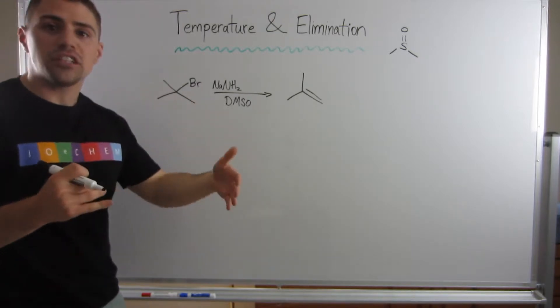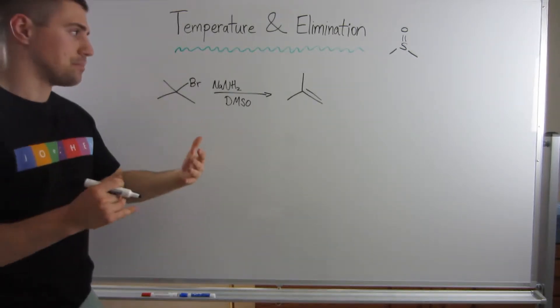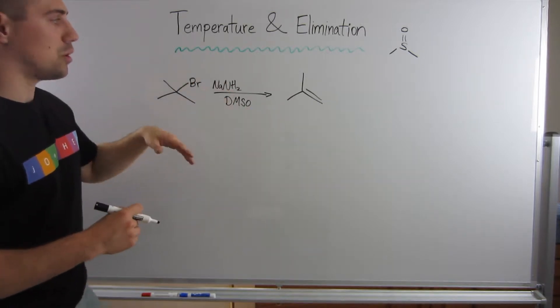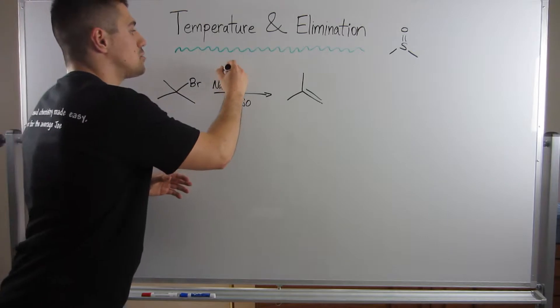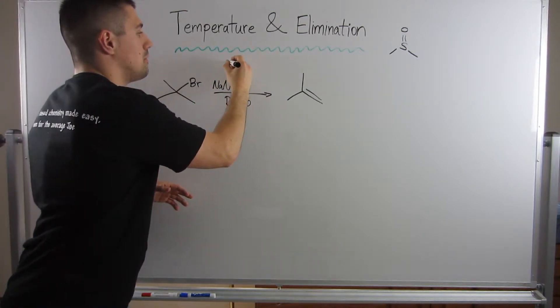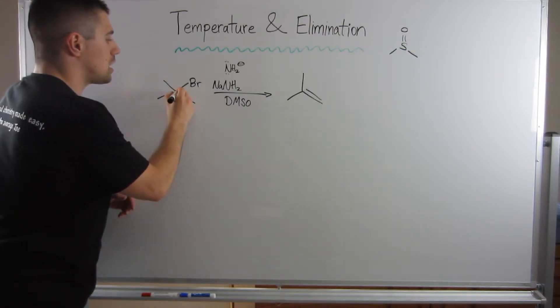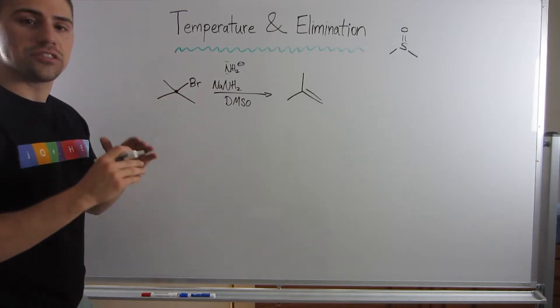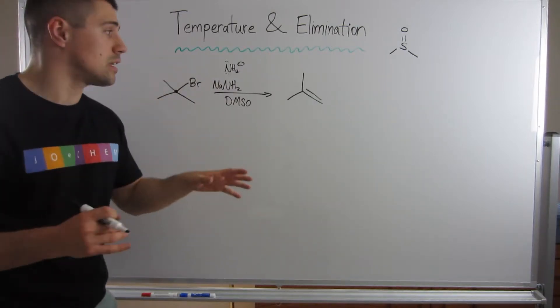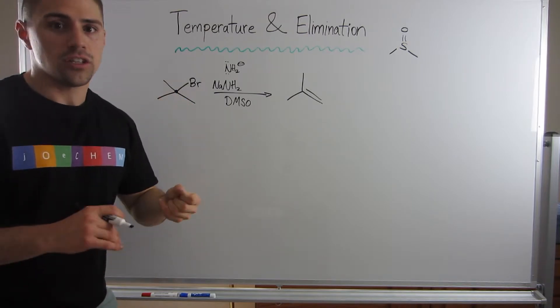We know that is definitely good for E2 and SN2. The big giveaway here is right here we have NH2 minus, super good base, small base. Our substrate is tertiary, good leaving group. Because it's tertiary we use strong base, zero chance of SN2 occurring. We know we have something really good at ripping protons off, so E2 100% can happen here.